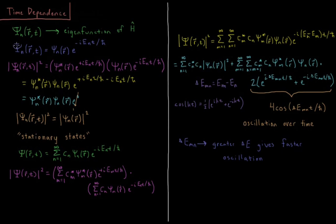If that's the case, then the time-dependent wave function psi_n of r, t is equal to the spatial wave function psi_n of r — notice there's no time variable in the spatial part — times the time part, e to the minus i·En·t over ℏ, En being the energy of this eigenfunction of the Hamiltonian. This whole function is a complex exponential rotating around the complex plane.